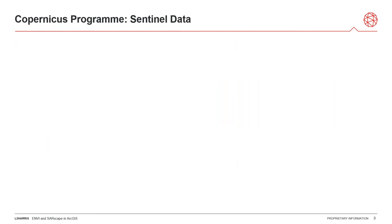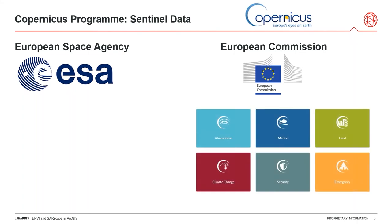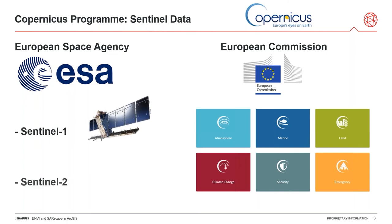Let me introduce Sentinel satellites for those unfamiliar with them. These satellites are part of the Copernicus program, the Earth observation program coordinated by the European Space Agency and European Commission, offering satellite data and services related to atmosphere, marine, land, climate change, security, and emergency. Sentinel-1 are twin synthetic aperture radar satellites — the main data source for these use cases. Sentinel-2 are twin optical satellites used as support for SARscape analysis.